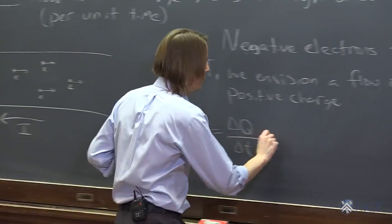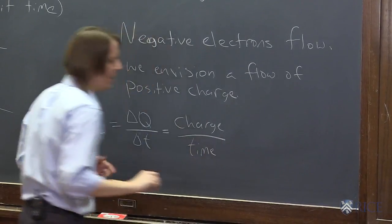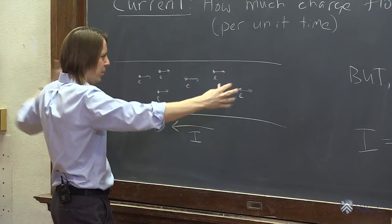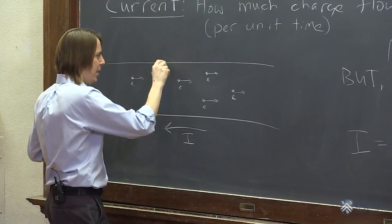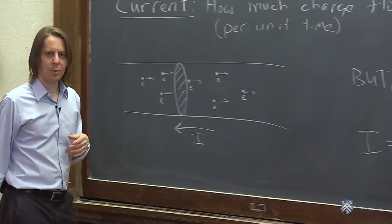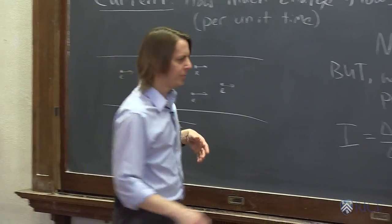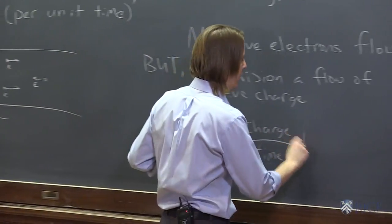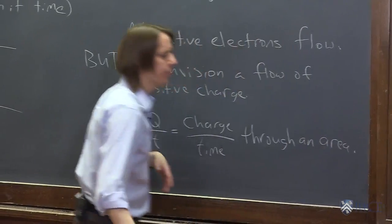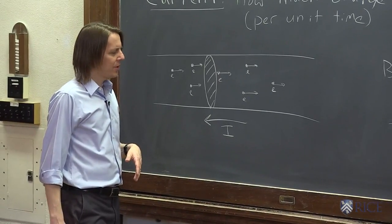So current is equal to the amount of charge over time. You might say that's still a little imprecise — how much charge? If I made the wire longer, would there be more charge? So you've got to think about a little cross-sectional area inside the wire. It's really the amount of charge that crosses that cross-sectional area per unit time — charge over time through a cross-sectional area in the wire. That's now a pretty precise definition.